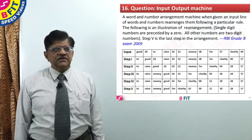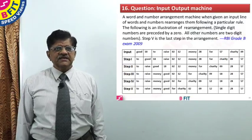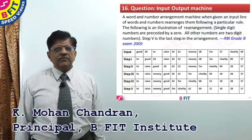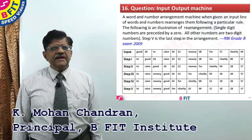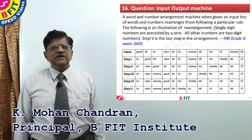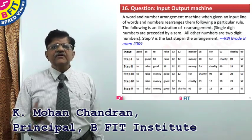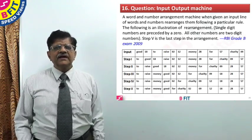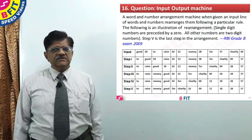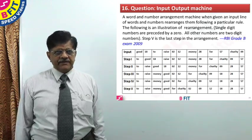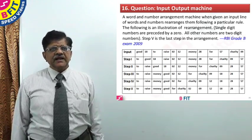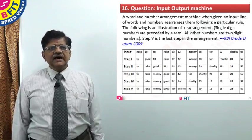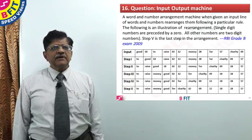Now let us go to the next question. Question number 16 contains a problem taken from RBI Grade B exam 2009. This is a little difficult problem. A word and number arrangement machine, when given an input line of words and numbers, rearranges them following a particular rule.